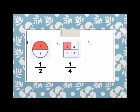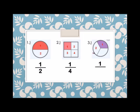Next example: we have a circle. How many shaded parts? 1. So our numerator is 1, over 1, 2, 3 — divided by 3. So the denominator is 3.